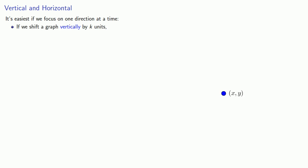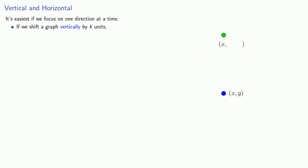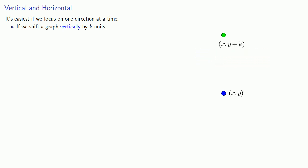It's easiest if we focus on one direction at a time. If we shift a graph vertically by k units, then whatever our original x and y coordinates were, our x-coordinate will remain the same because we haven't moved left or right. Our y-coordinate, on the other hand, will change by k. So our y-coordinate will now be y plus k. And we can express that as follows: our original coordinates x, y will be transformed into the new coordinates x, y plus k.